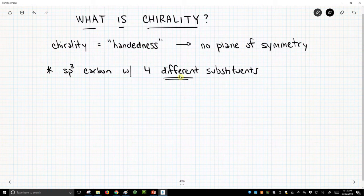We see a lot of sp3 hybridized carbons. They're not all chiral because they don't all have four different substituents. Let's see an example of this. There's our carbon.